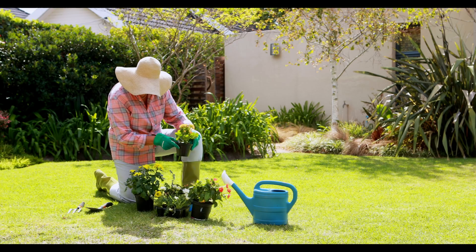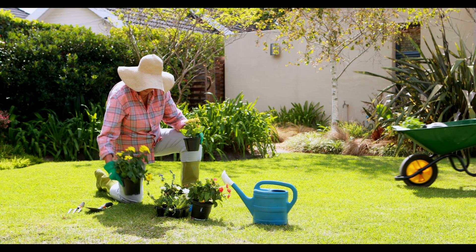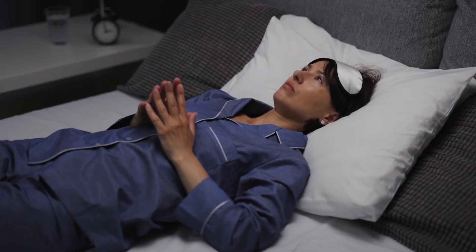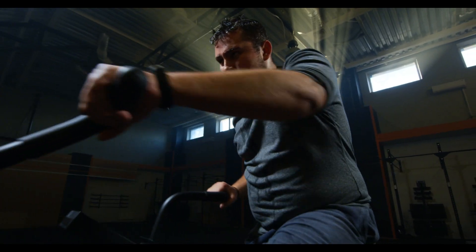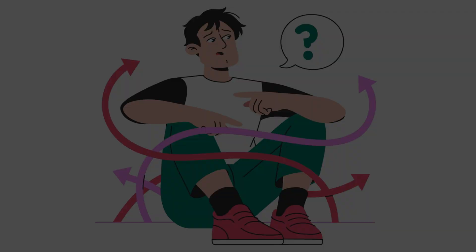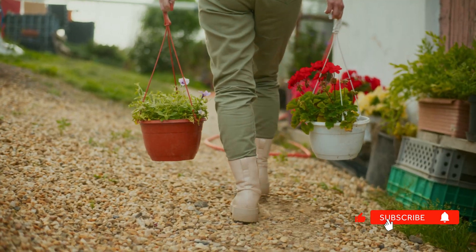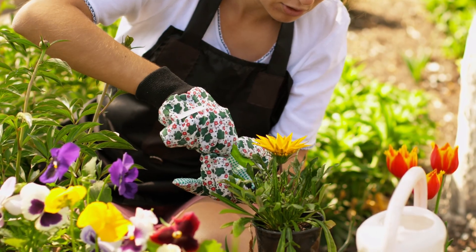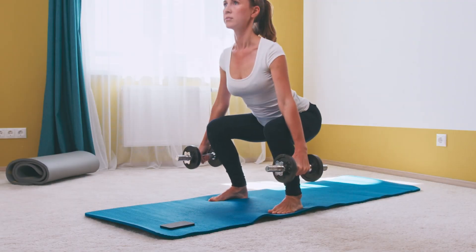Third, circadian reset. Morning sunlight while gardening helps regulate melatonin production. Your circadian rhythm is your master clock for cellular repair. Winston Churchill used gardening to combat his black dog depression. It regulated his sleep when nothing else could. Smart people overthink exercise. Is this optimal? Am I doing it right? Gardening bypasses analysis paralysis. There's no wrong way to dig. Yet three hours weekly can give you cardiovascular benefits comparable to moderate gym activity without the mental barrier.